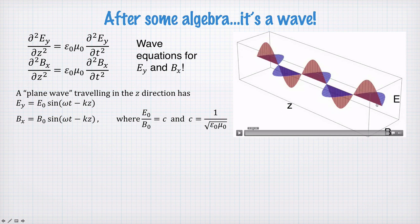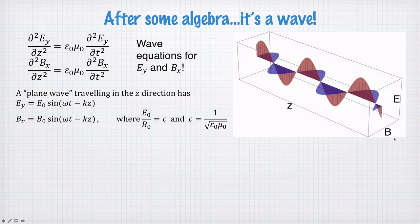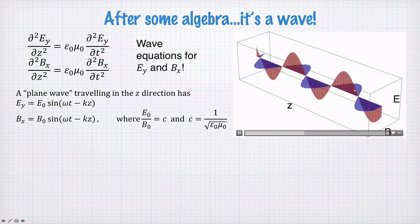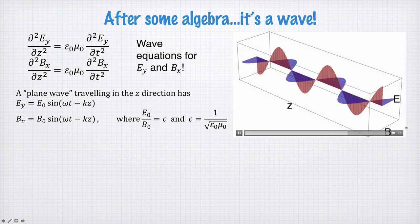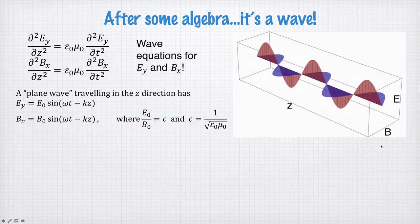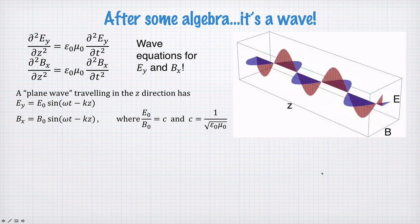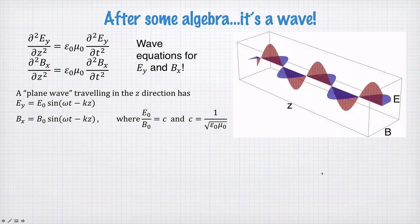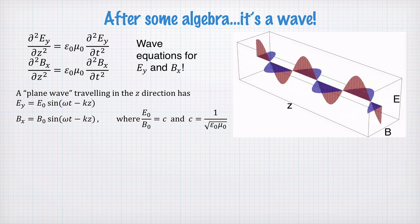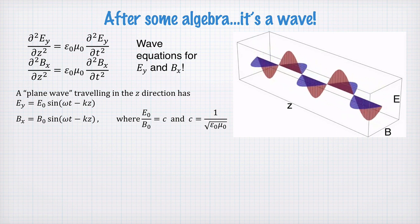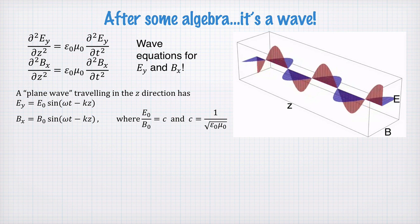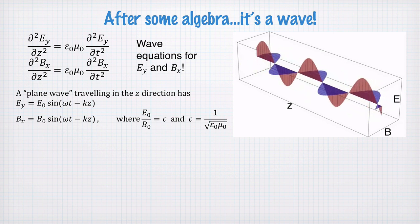If we look at this along some line in space in the z direction, then it would look like this. So the electric field is the red bit in the vertical direction. That's Ey. The magnetic field is the blue bit in the horizontal direction. The waves are in phase. They're traveling in the z direction. But the electric and magnetic field directions, the vector components of the electric and magnetic fields, are perpendicular to the direction of motion.